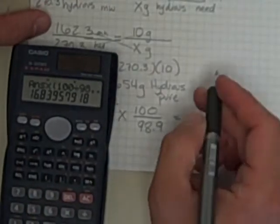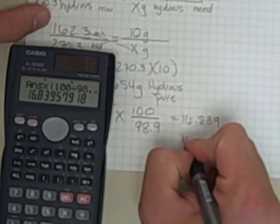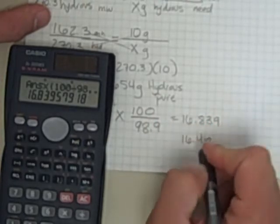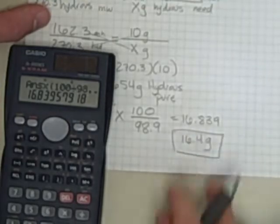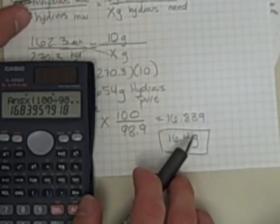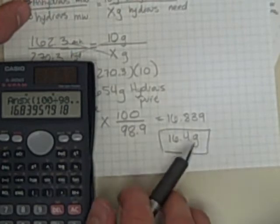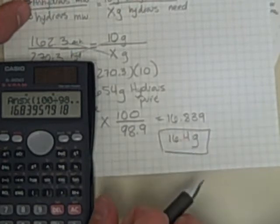And now when I look at that, I say this is 16.4 grams of impure hydrous ferric chloride.